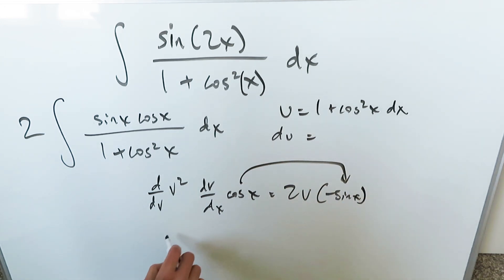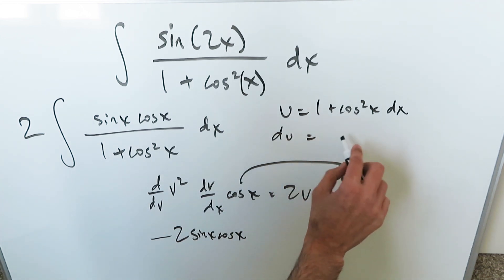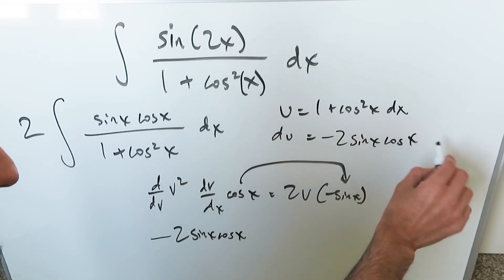When we re-substitute the v, what do I have? I have a minus 2 sine x cosine x. That's what it is. du is equal to minus 2 sine x cosine x dx.